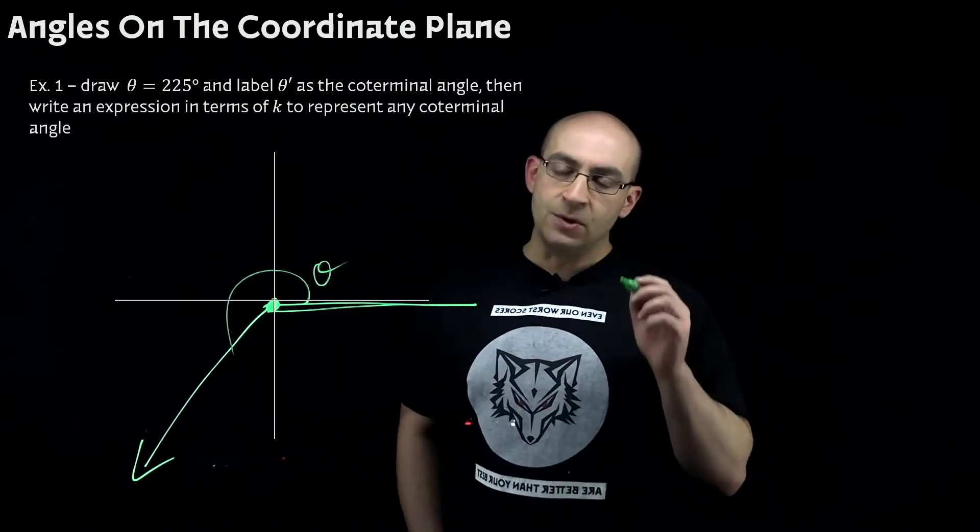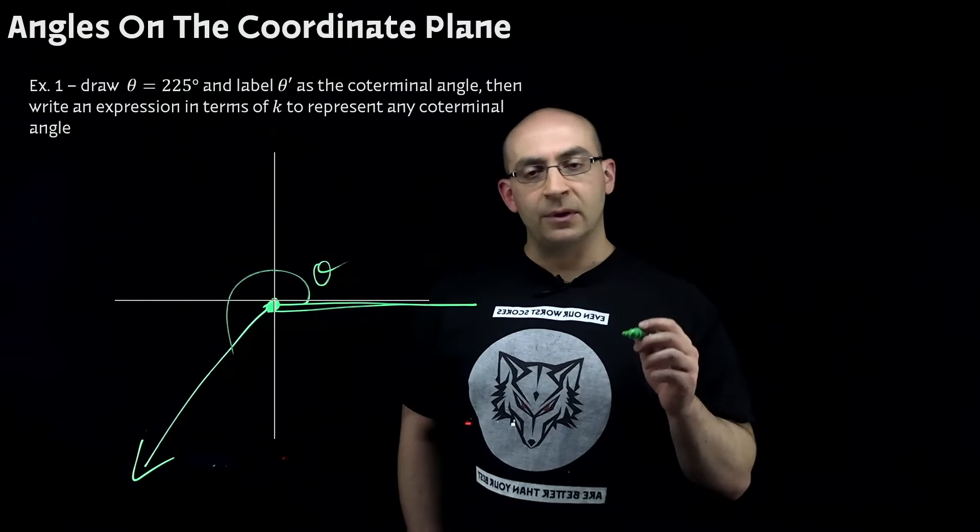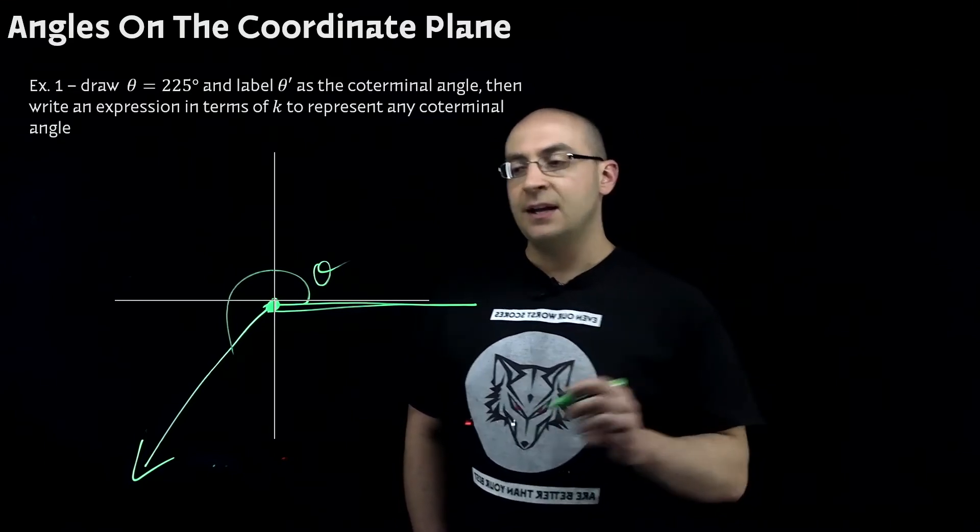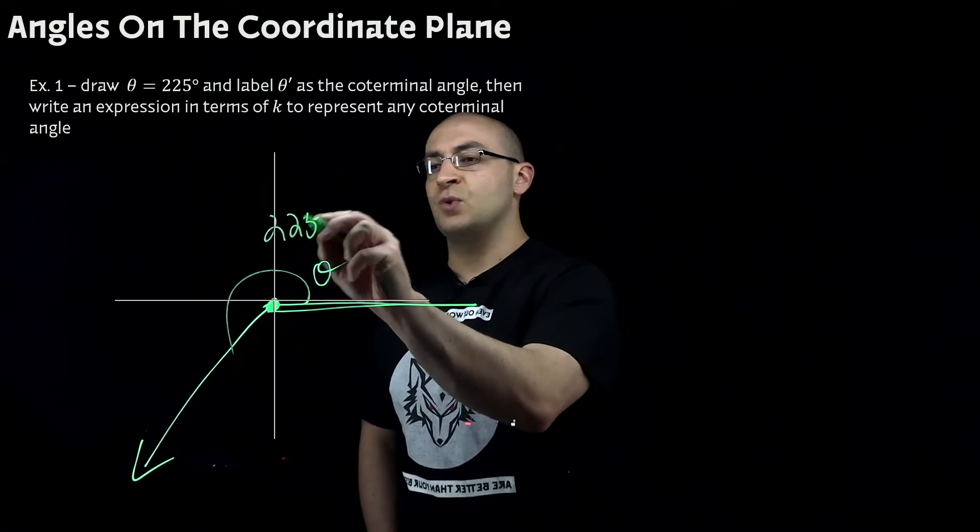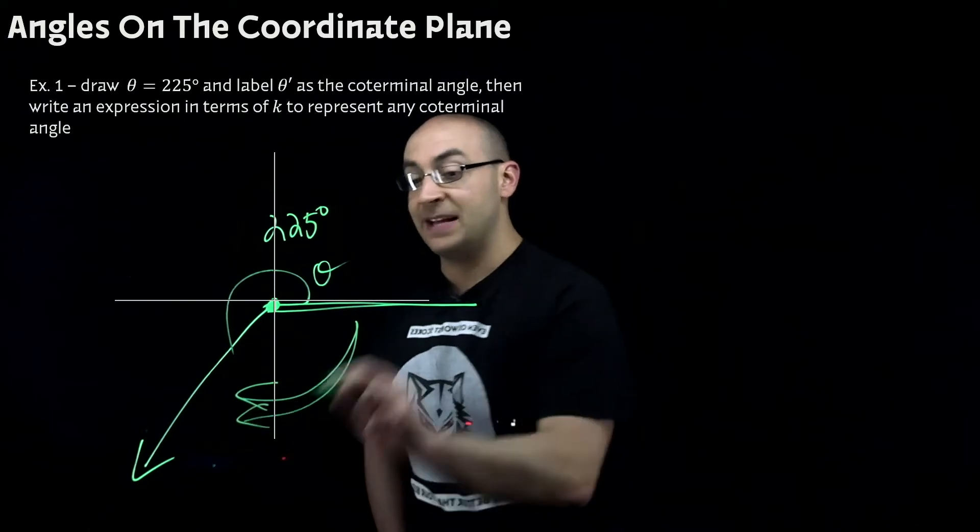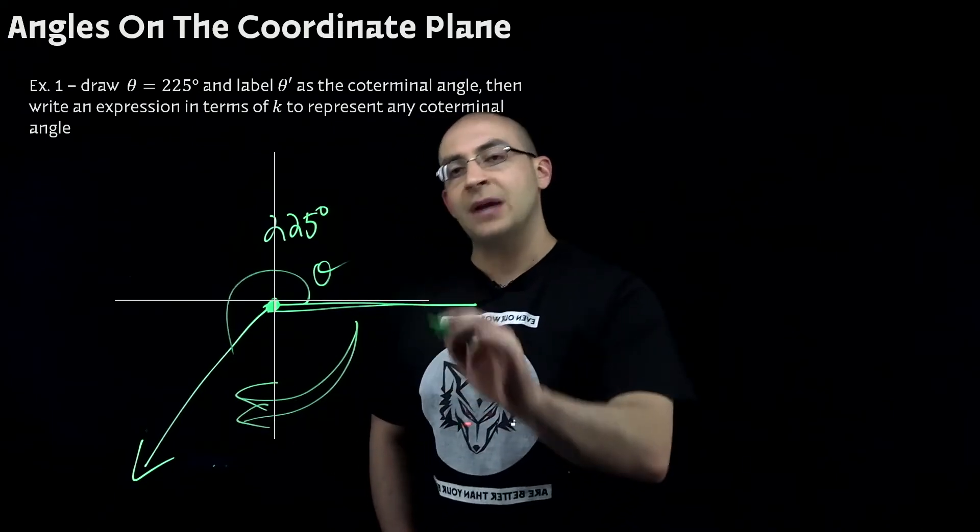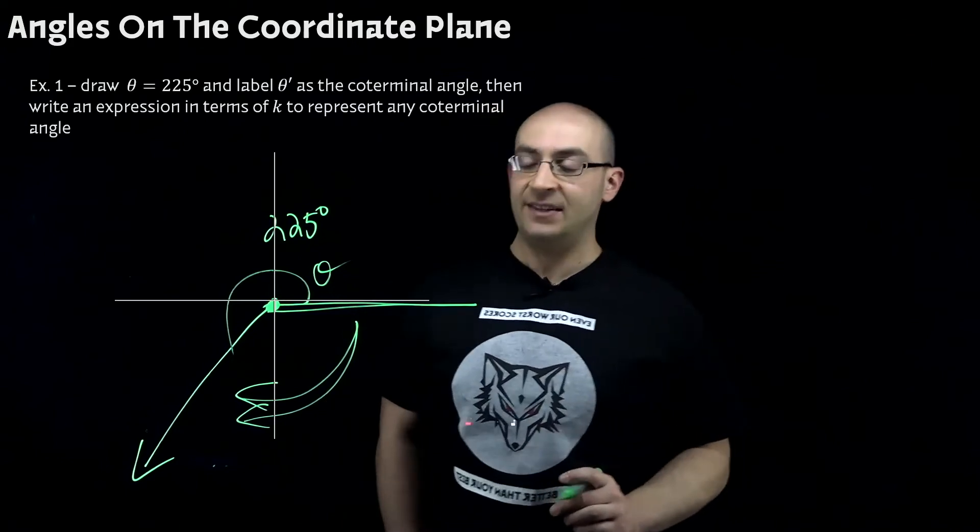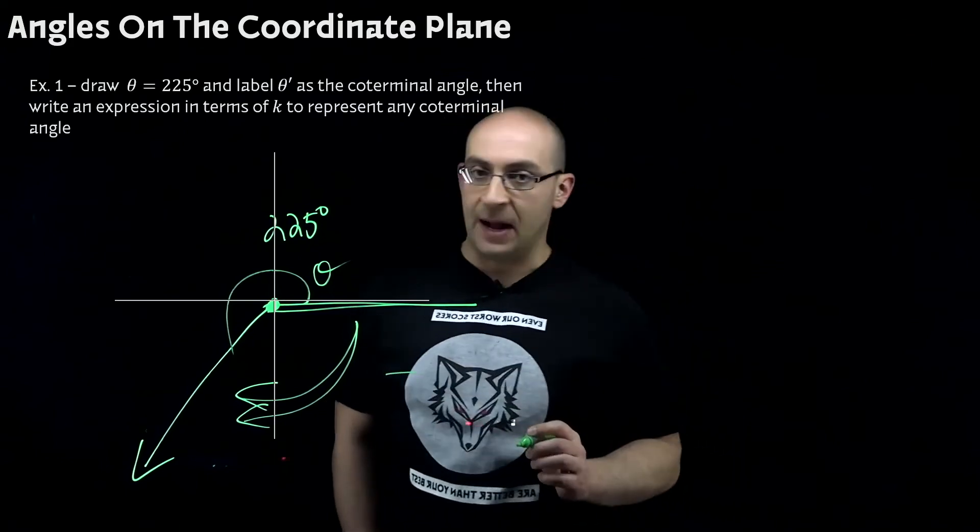Now its coterminal angle. Remember coterminal is where they meet at the terminal point. If this represents a 225 degree angle, I am looking for the other side that began with its same initial point, but I'm kind of reversing it so that they meet at the same terminal or end.